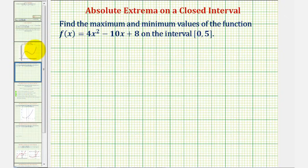So we'll begin by determining the critical numbers by finding the first derivative and determining where it's equal to zero or undefined. So f prime of x would be equal to 8x minus 10. The derivative of 8 would be zero. Notice how we have a linear function here, which will never be undefined. So to find the critical number, we'll set this equal to zero and solve for x.